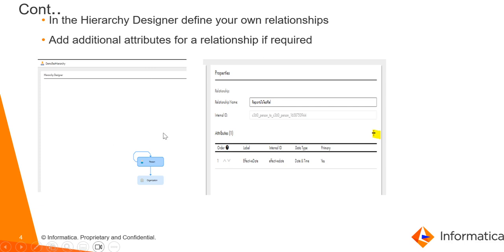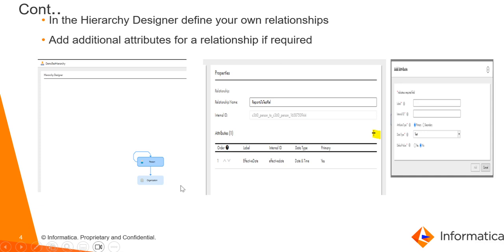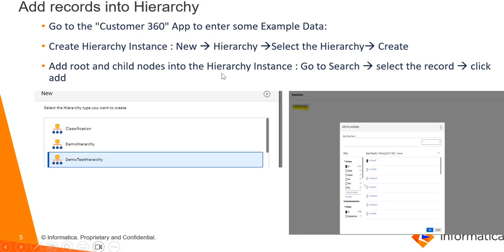This is a sample hierarchy model which has been created in the Business 360 console. To add records into the hierarchy, we can log into Customer 360 and from the UI we can create a hierarchy instance and then add root and child levels into this hierarchy instance.